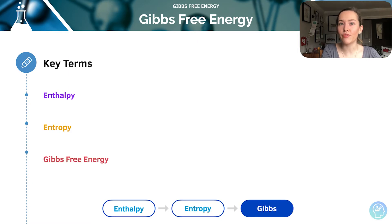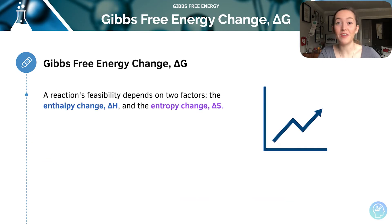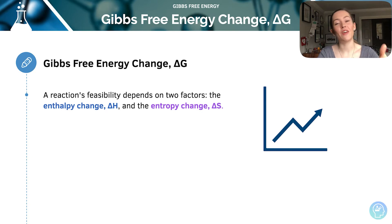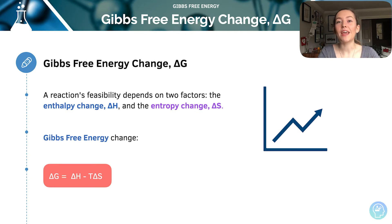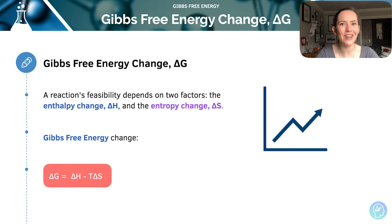Today we're introducing Gibbs free energy, which takes into account both the enthalpy change and the entropy change of a system. A reaction's feasibility depends on two factors: the entropy change calculated in the previous lesson and the enthalpy change calculated in previous lessons. With those two factors we can calculate the Gibbs free energy change, and with that we can work out whether a reaction will happen spontaneously or not. We can also work out the temperature at which reactions can work spontaneously, which you can see has a temperature value — that can be really useful.